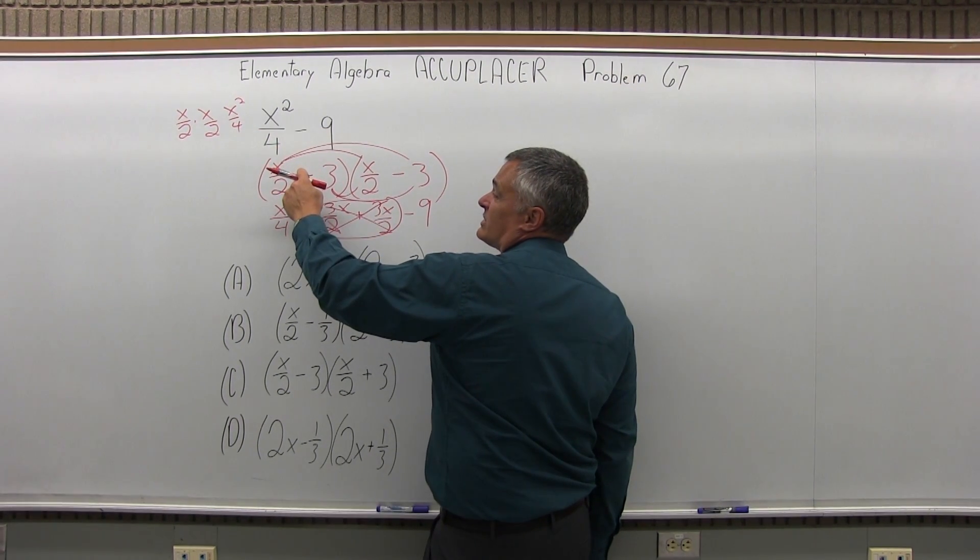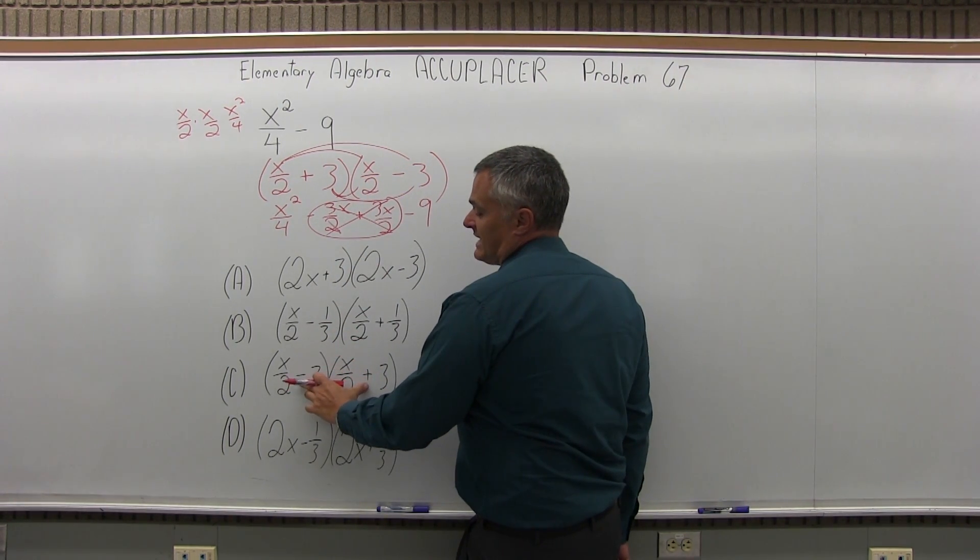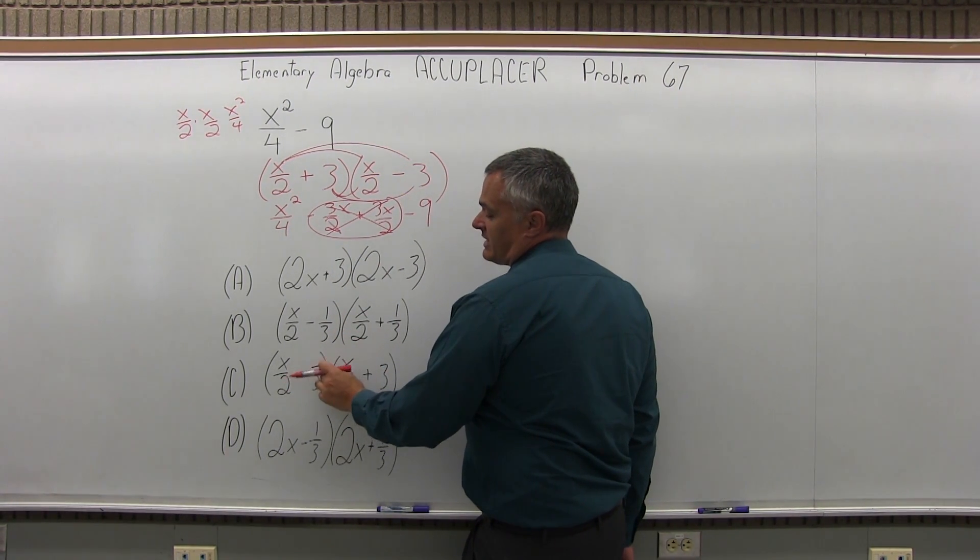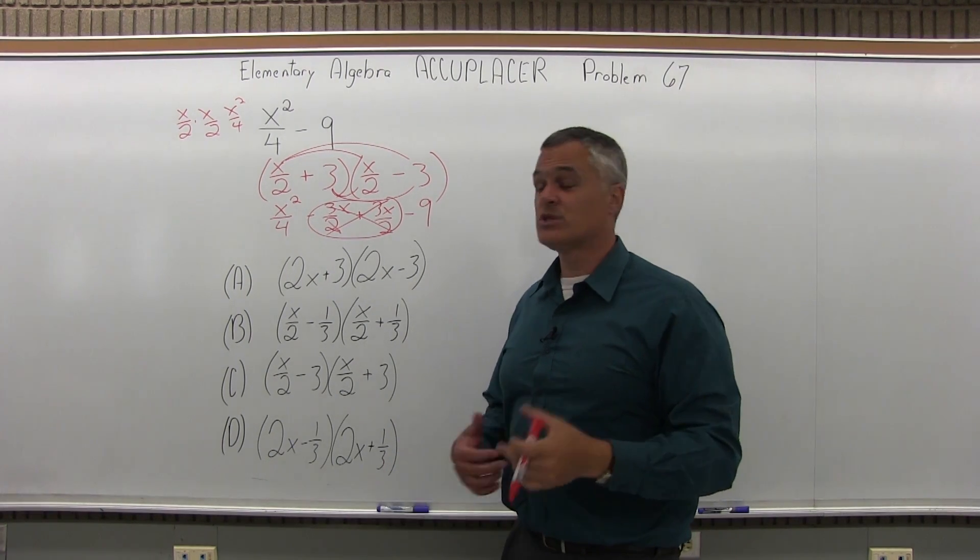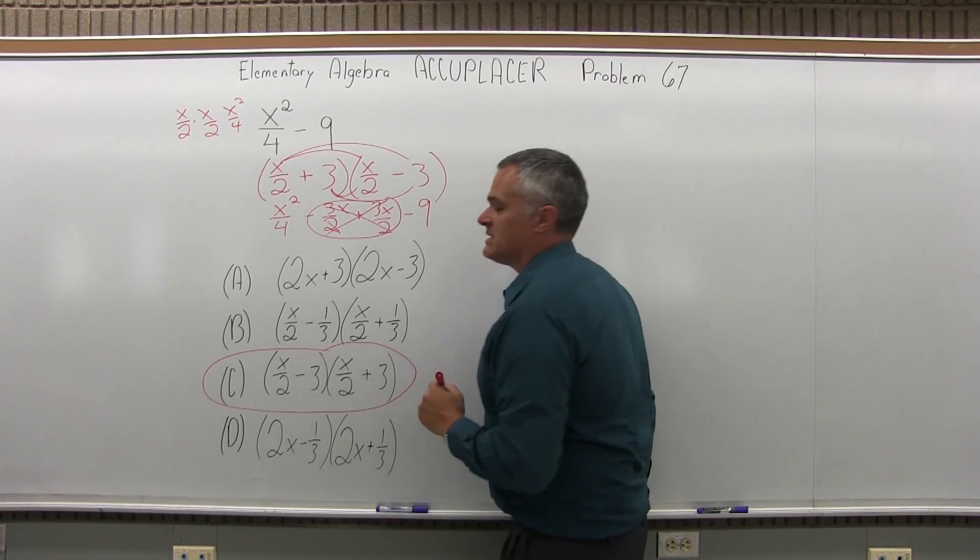So my answer was x over 2 plus 3, x over 2 minus 3. Option C has that, but in the other order. But again, since it's multiplied, you can really switch the order if you want to. So the answer for number 67 is option C.